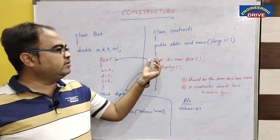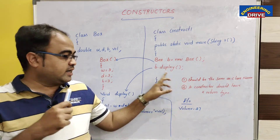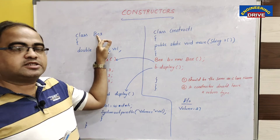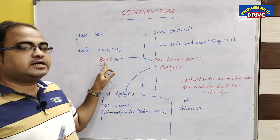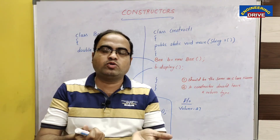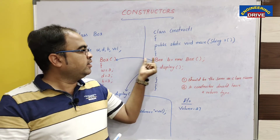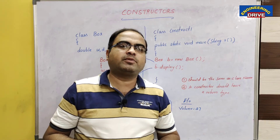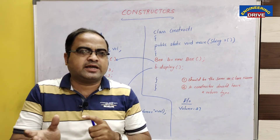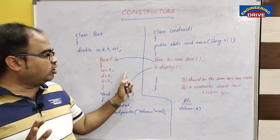To summarize the three points about constructors: Point one — a constructor name will be the same as the class name. Point two — a constructor does not have any return type, not even void. Point three — there is no need to call the constructor explicitly; it is invoked automatically whenever the object is created. The main purpose of using a constructor in Java programs is to initialize the values to the variables of the object automatically.